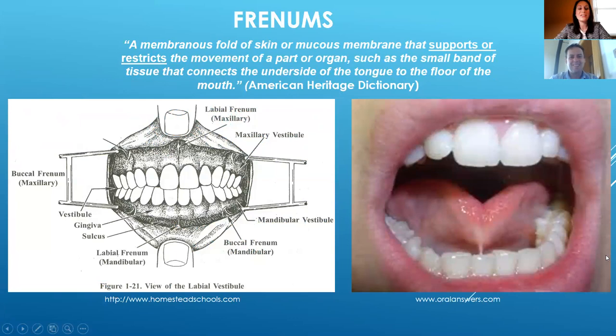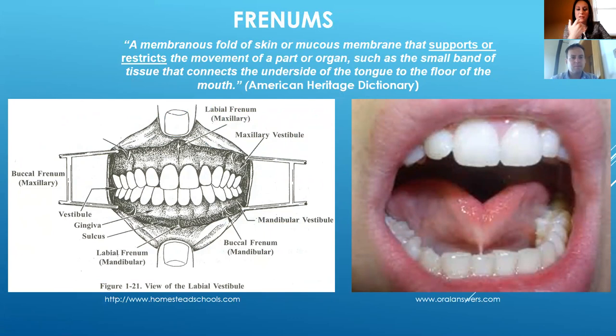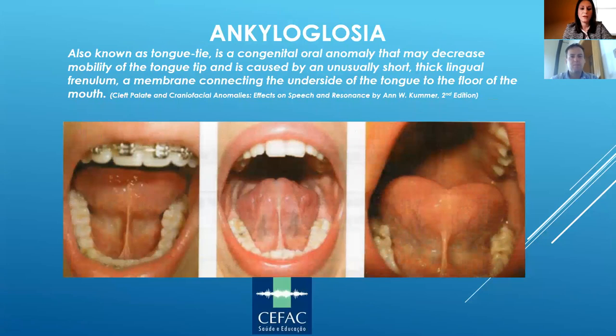There are seven frenums in our mouth. The first is the maxillary labial frenum on the underside of the upper lip. Then there is the labial frenum on the mandibular, which is on the underside of the bottom lip. There are also four buccal frenums, and finally the frenum on the underside of the tongue, which is called the lingual frenum.